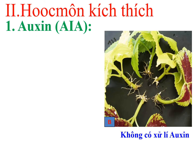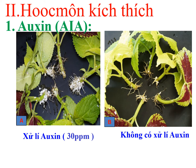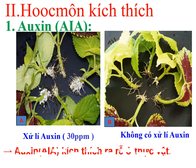Quan sát thêm hình ảnh: ở các cây con, hình A có xử lý auxin, hình B không xử lý auxin. Sau một thời gian, ở hình A các cây con ra rễ phụ nhiều hơn, còn hình B do không xử lý auxin nên rễ phụ được tạo ra ít hơn. Qua đây chúng ta thấy rằng auxin có tác dụng kích thích ra rễ ở thực vật.